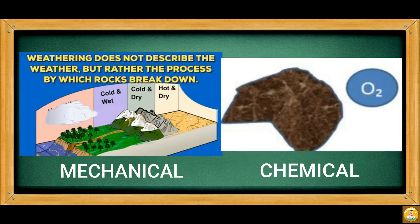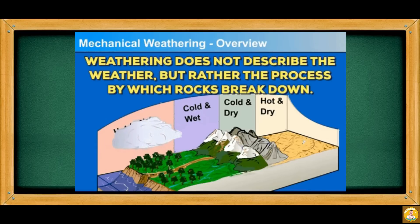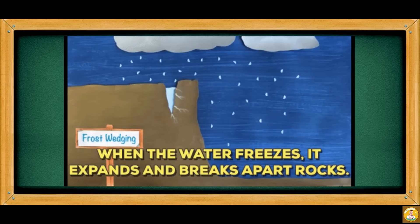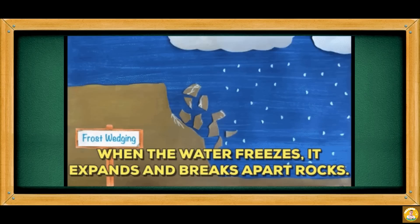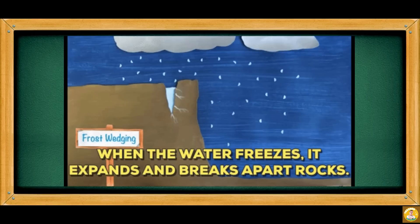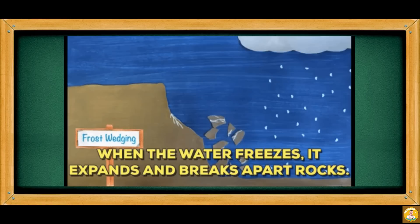Weathering can either be mechanical or chemical. Mechanical weathering is a physical wearing away of rocks without any change in their chemical nature. It occurs when rocks break down into smaller pieces due to physical forces such as water and temperature, without changing the mineral compositions of the rocks.